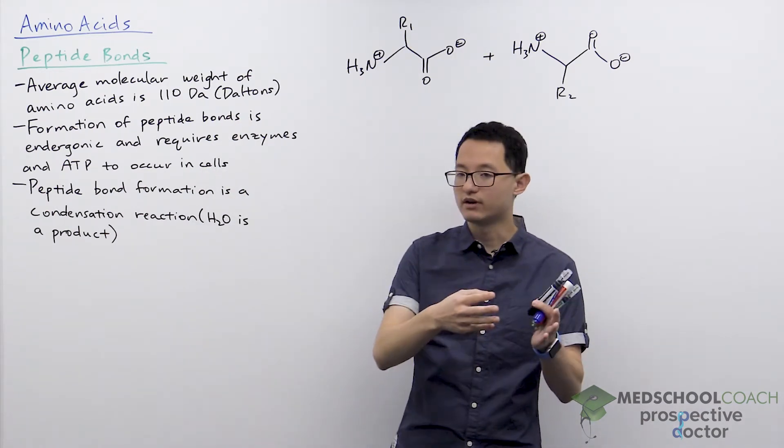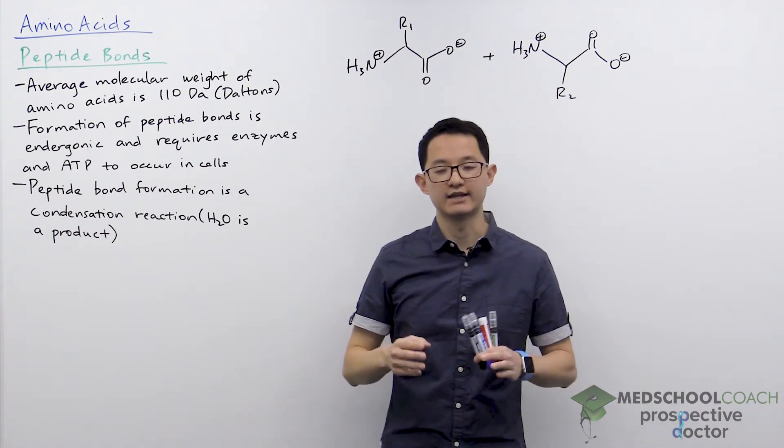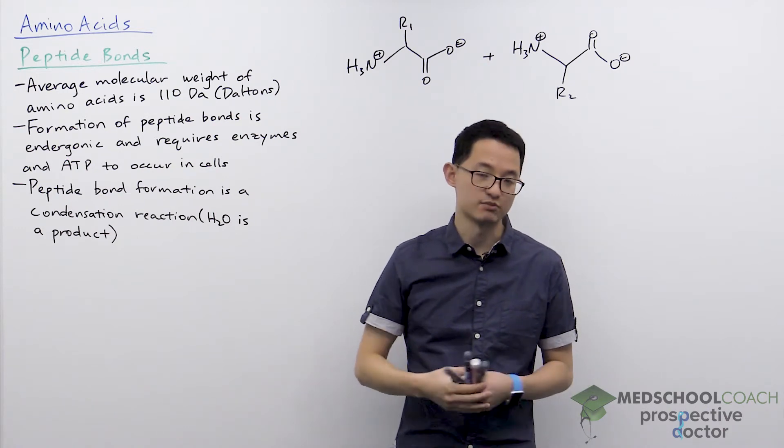So whatever weight your protein is, you divide that by 110, and that gives you an estimate of the number of amino acids that protein is made of.